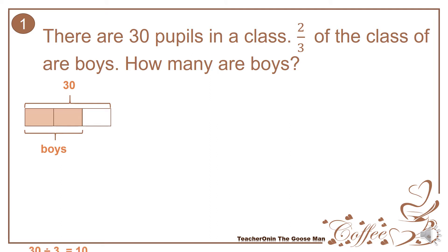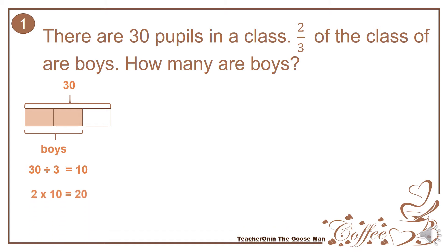So therefore, 30 divided by 3 is equal to 10. I have 2 equal parts for the boys, so therefore 2 times 10 is equal to 20. So there are 20 boys in a class.